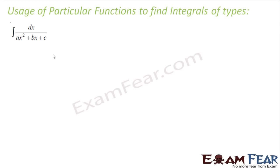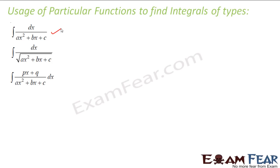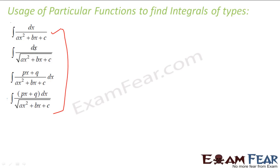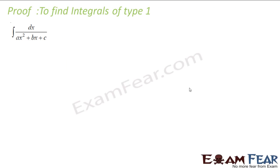We will use particular kinds of functions in formulas of this type. We will also learn to use this for formulas of the form (px+q) divided by the square root of ax²+bx+c. There are two patterns here: ax²+bx+c, root of ax²+bx, and (px+q) divided by ax²+bx+c or (px+q) divided by root of ax²+bx+c. We will convert these into the same pattern. Let's see how to convert them one by one.